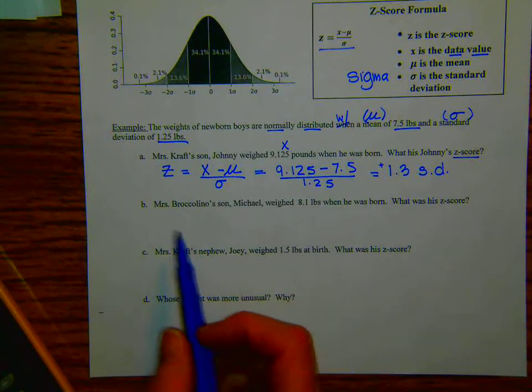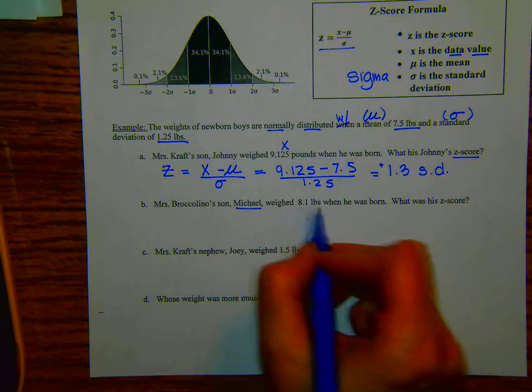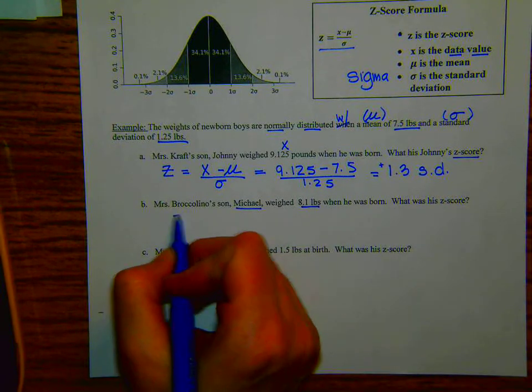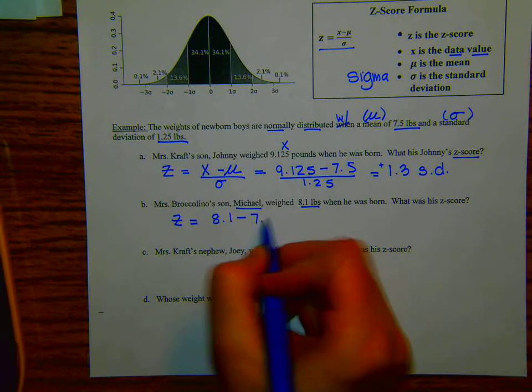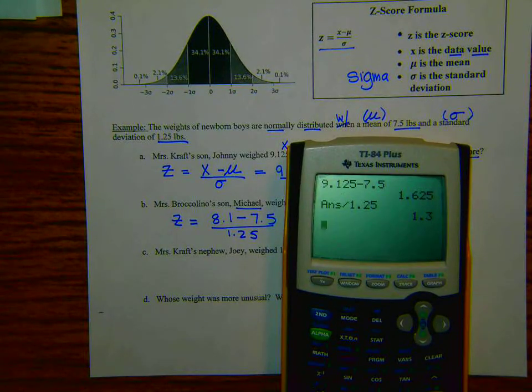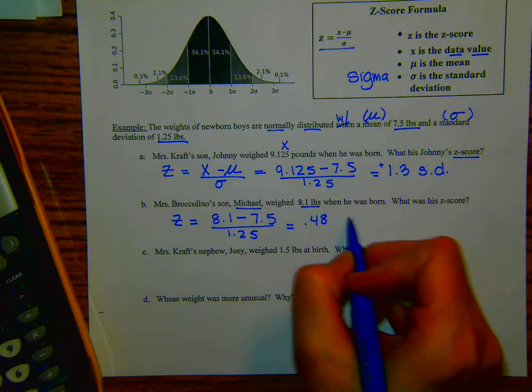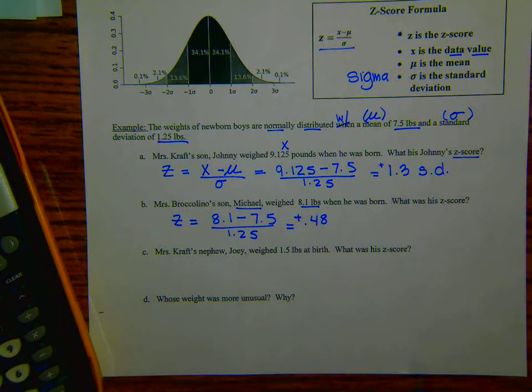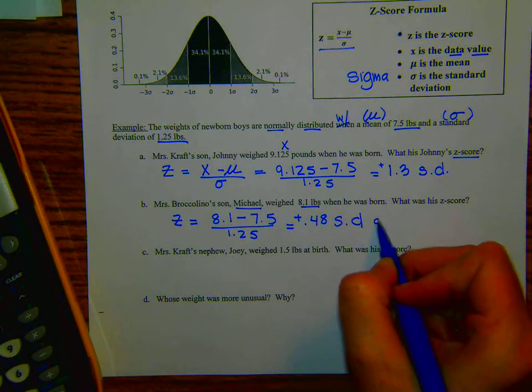Okay. So let's do this again. Let's compare to another score. This is Broccolino's son, Michael. Michael weighed 8.1 pounds when he was born. What is his z-score? Z equals 8.1 minus mu, which is 7.5 divided by sigma 1.25. So we have 8.1 minus 7.5 divided by 1.25. 0.48 equals 0.48, approximately 0.5. So that's also positive. So what does that mean? It means that Michael's birth weight was 0.48 standard deviations above the mean.